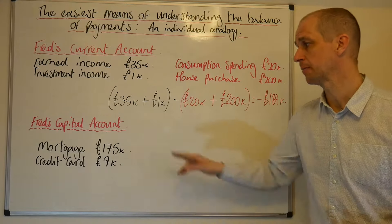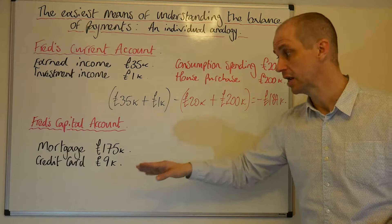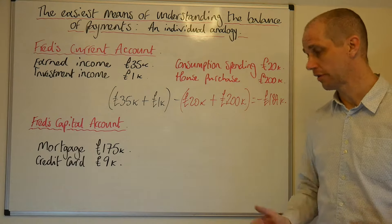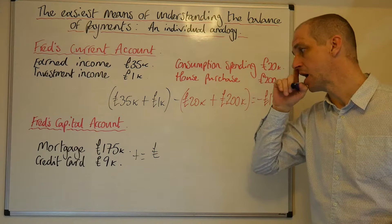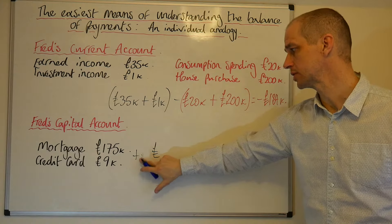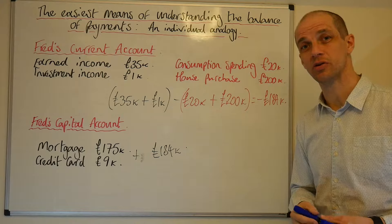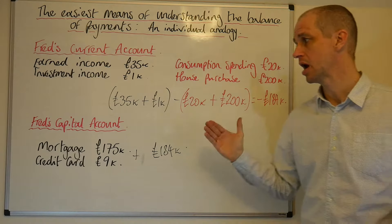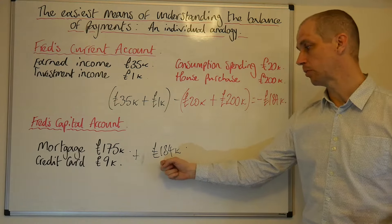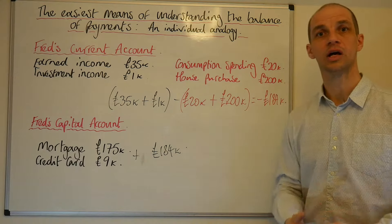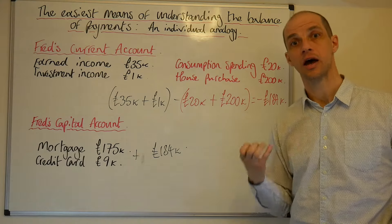Looking at Fred's capital account, we can see he's got a mortgage of £175,000 and also £9,000 of credit card debts. Adding those together gives us £184,000 positive. So he's got a positive capital account position where money is flowing to him to enable him to live beyond his means. Positive £184,000 against negative £184,000 — these two areas balance out, just as your balance of payments balances.